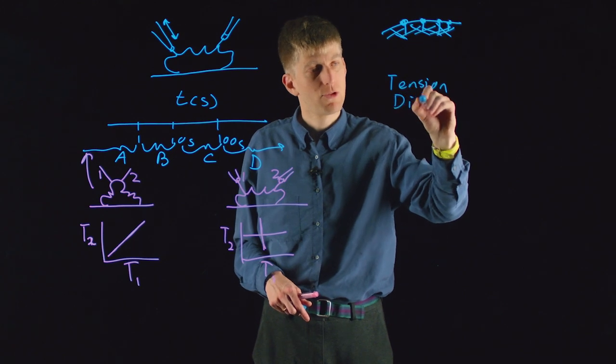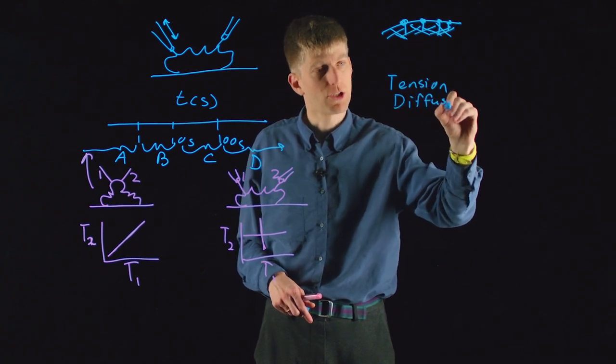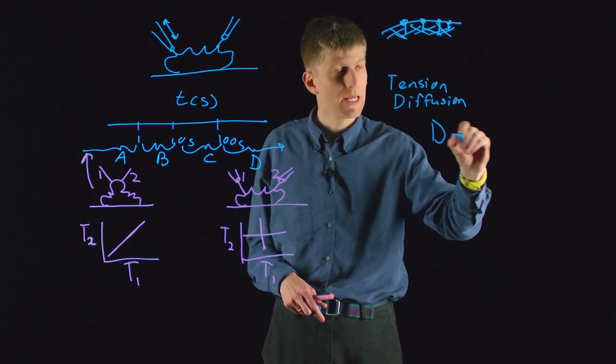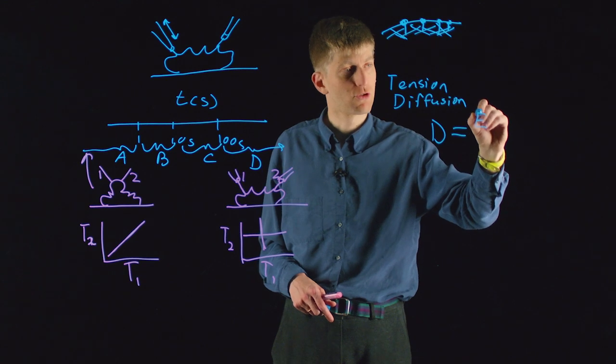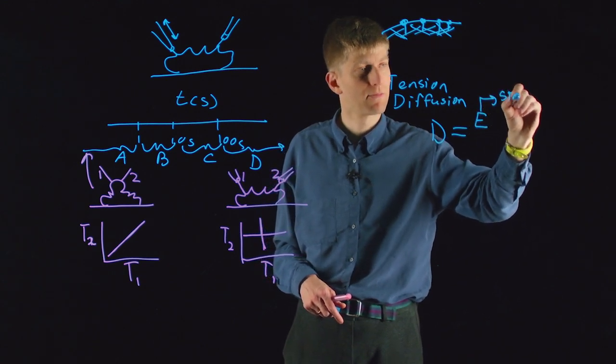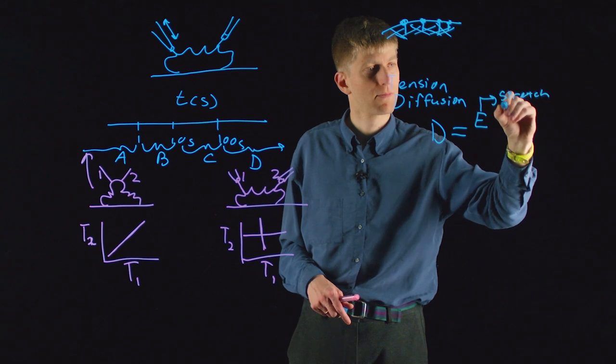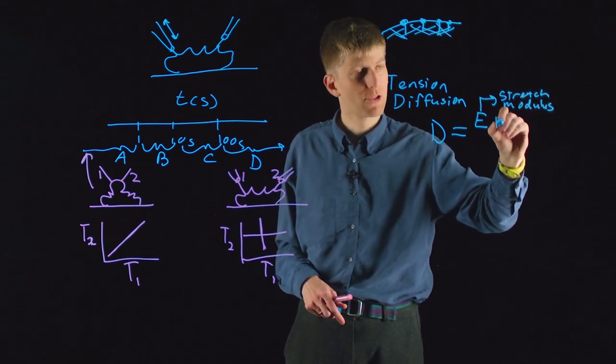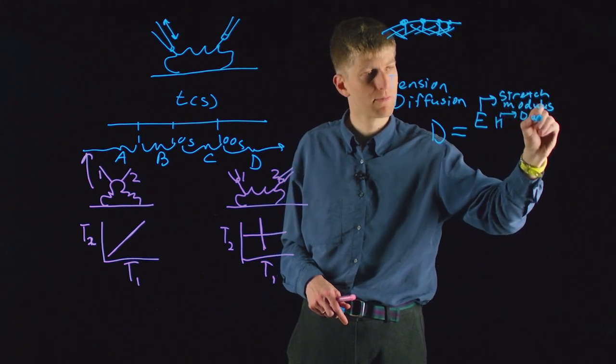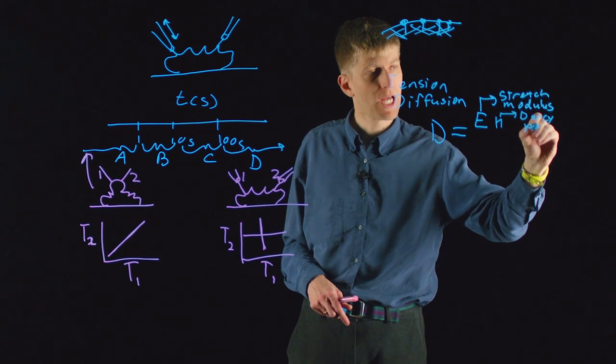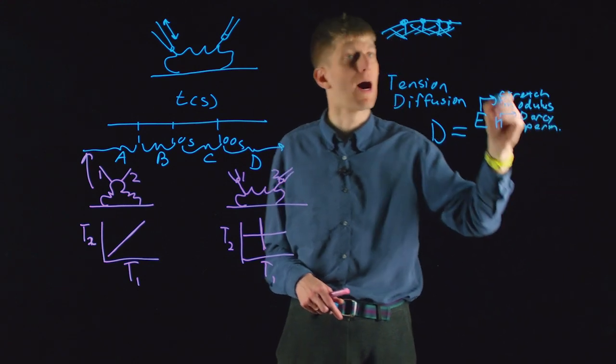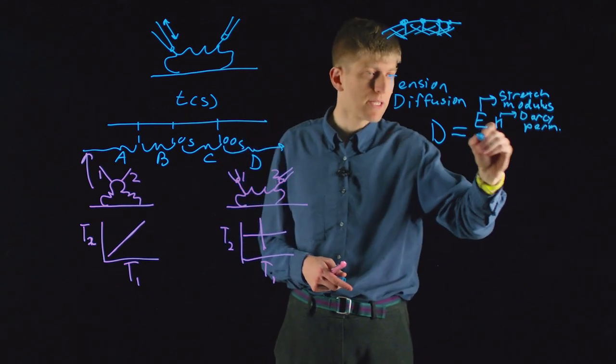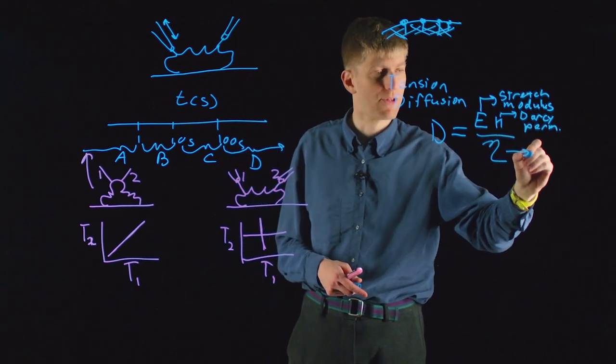And the diffusion coefficient for this propagation of membrane tension is dependent on the stretch modulus of the membrane. It depends on a parameter called the Darcy permeability, which captures the effect of the obstacles on the flow resistance of the membrane. And it depends inversely on the viscosity of the membrane.